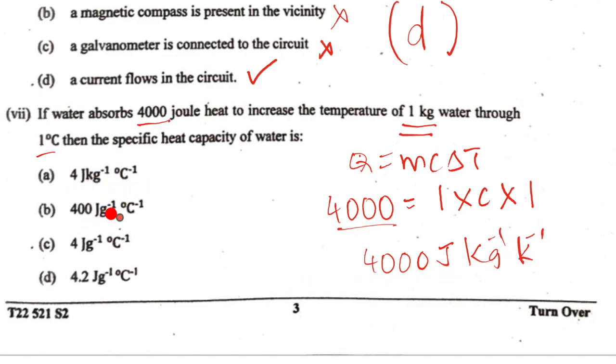So C will be 4000 joules per kg per kelvin. Can you see that anywhere here? 4000 joules per kg per kelvin, which means if it is